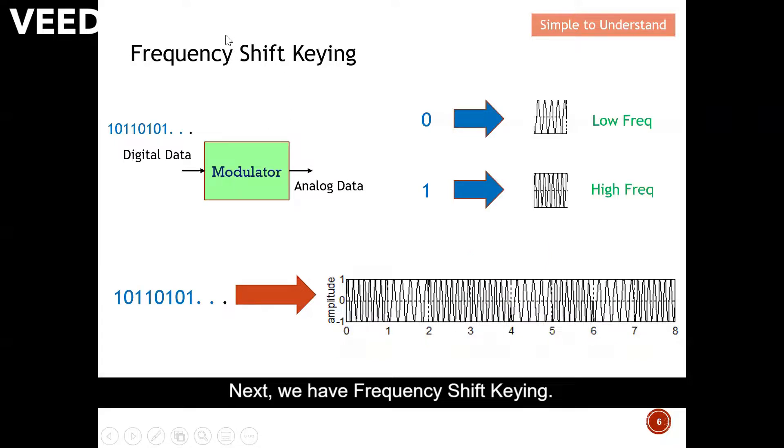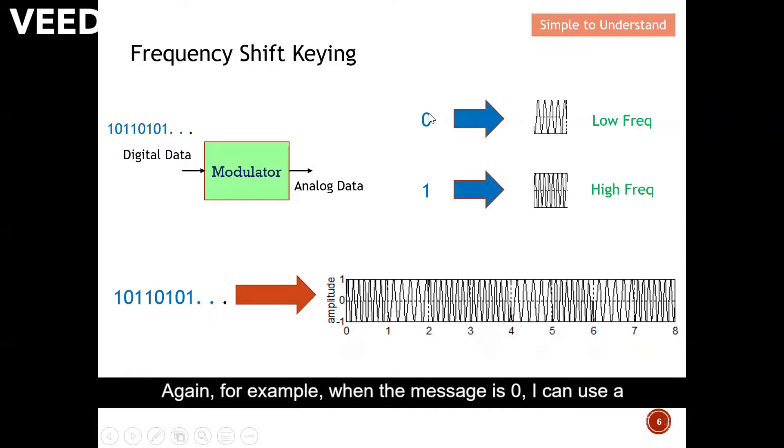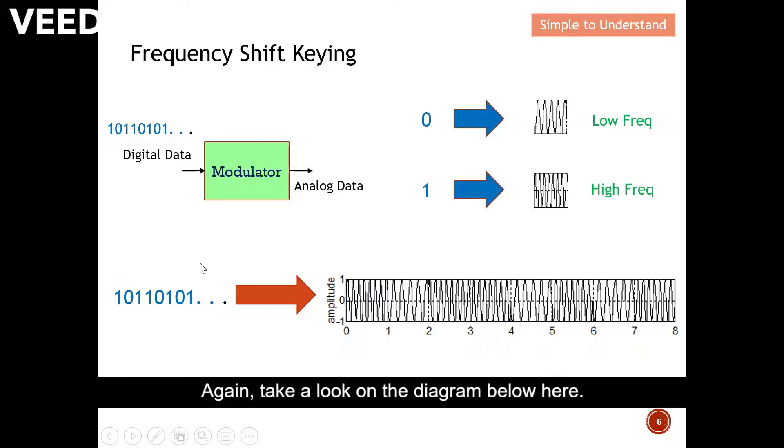Next, we have frequency shift keying. Again, for example, when the message is zero, I can use a lower frequency to represent it. When the message is one, I can actually represent it by a higher frequency. Again, take a look on the diagram below here. So again, this is a string of digital data.